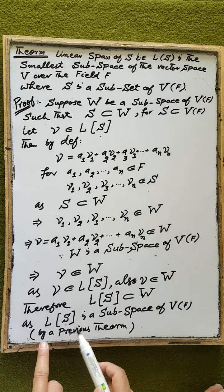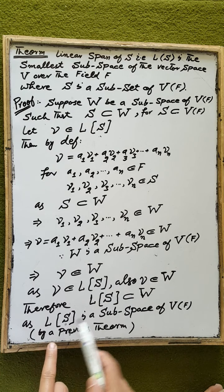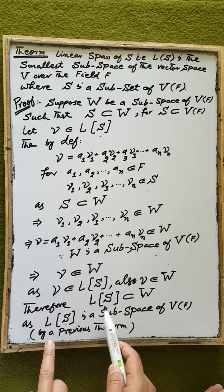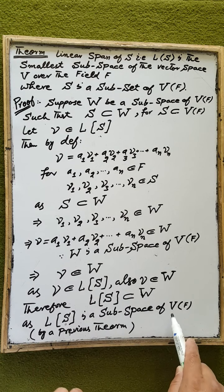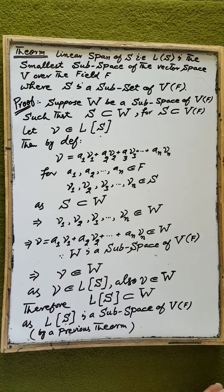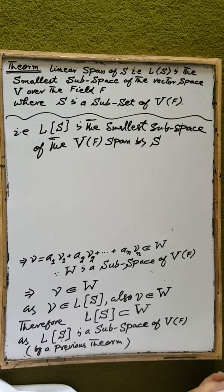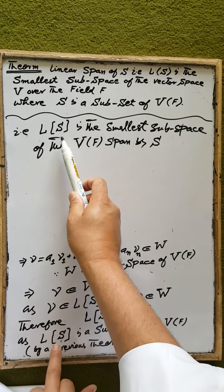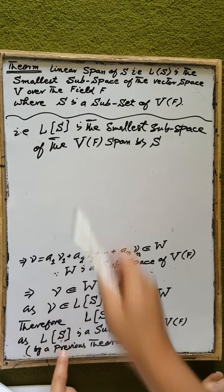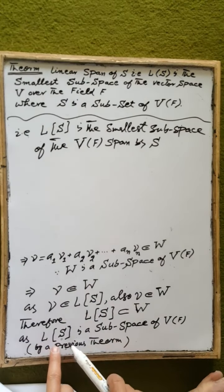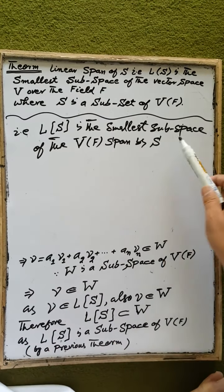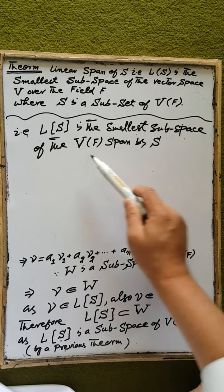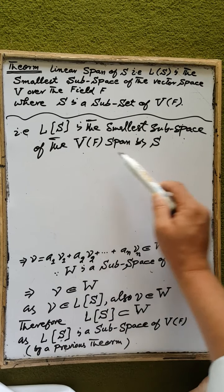By a previous theorem, the linear spanning set spanned by the set S is a subspace of the vector space V over the field F. Therefore, the linear spanning set spanned by S is the smallest subspace of the vector space V over the field F spanned by the set S.